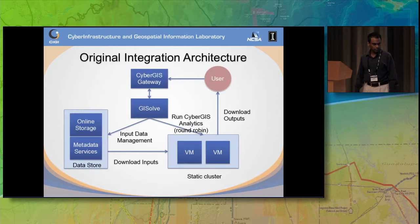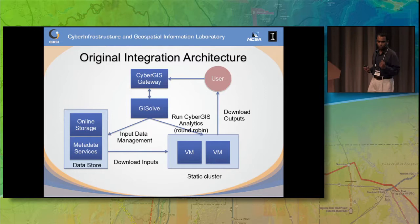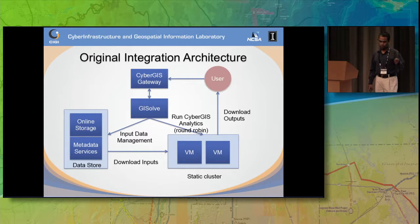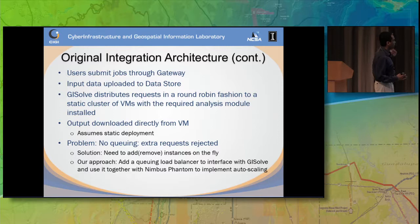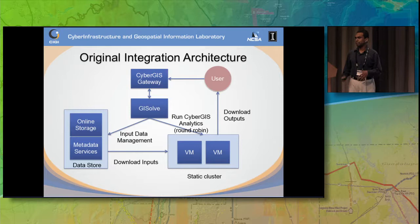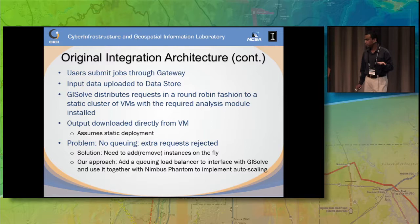What we initially had, in terms of integration with a static cluster environment, was the CyberGIS gateway talking to the middleware, with a data store for transferring data, and then a static number of VMs — say five VMs — on which the analyses were run. The GIS Solve middleware was going through them in a round-robin fashion, allocating resources as jobs came in from the gateway. The results were downloaded directly from the VM, so those VMs had to be persistent. If a VM went away, results might not be available to the user. Also, with no queuing, hundreds of incoming requests could cause some requests to get dropped, which would be a bad user experience.